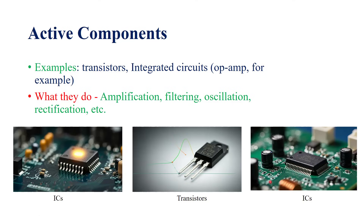Why are they called active? First, they are powered by an external signal source — you need external energy for these devices or components to work. In addition to that, these components or devices are called active because they have the ability to modulate the energy of the circuit into which they are employed. Active components are used for amplification, filtering, oscillation, rectification, and so on.